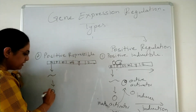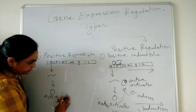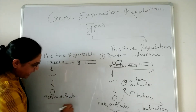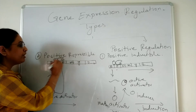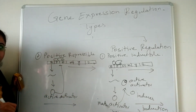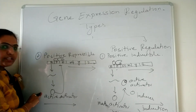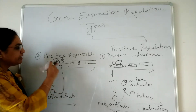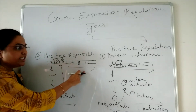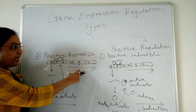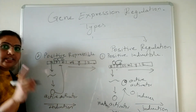In positive repressible regulation, the regulatory gene product is an active activator. Because it is active, it can bind near the promoter, allow loading of RNA polymerases, and initiate transcription — so there is expression of the genes. This first stage is called induction.